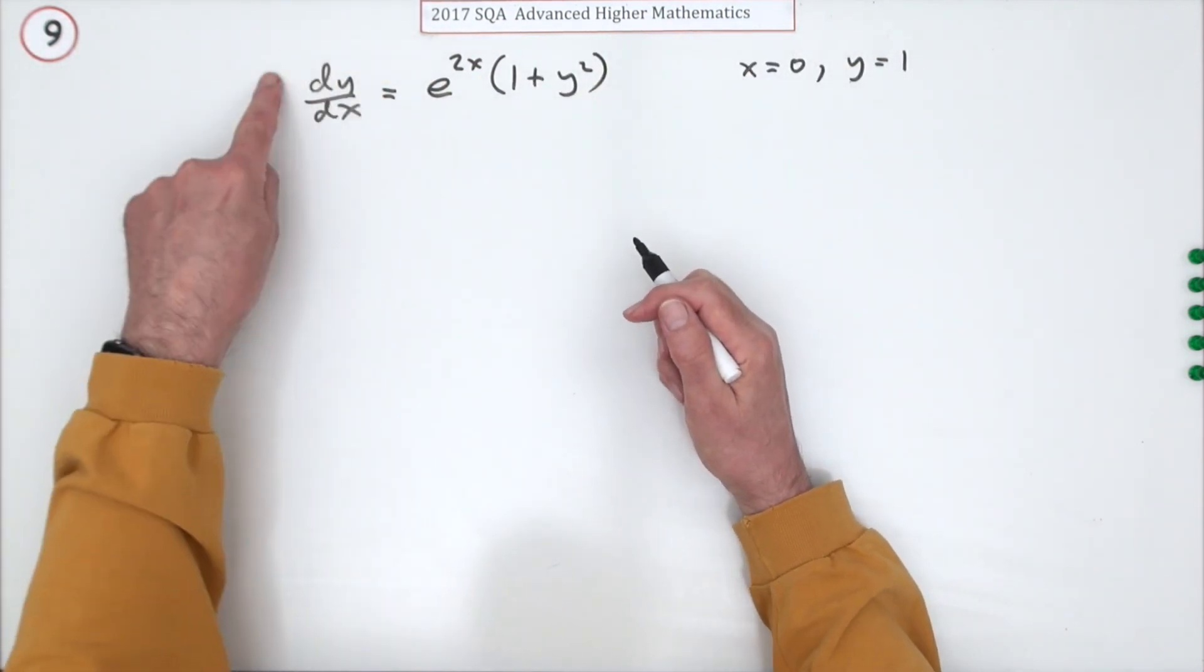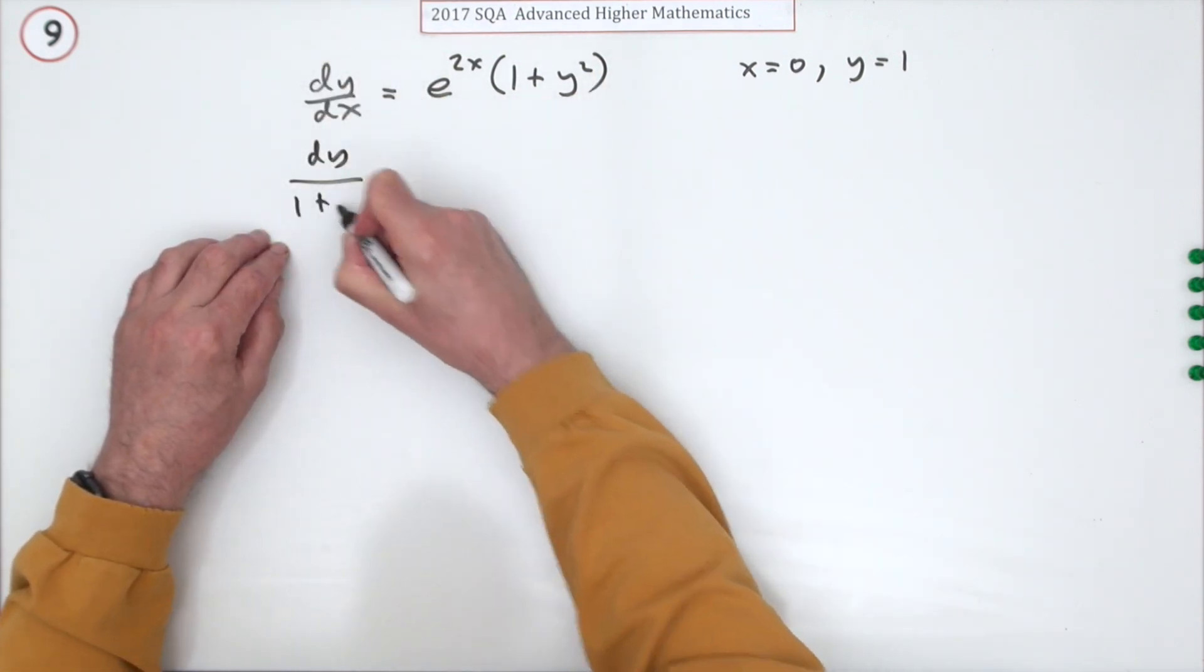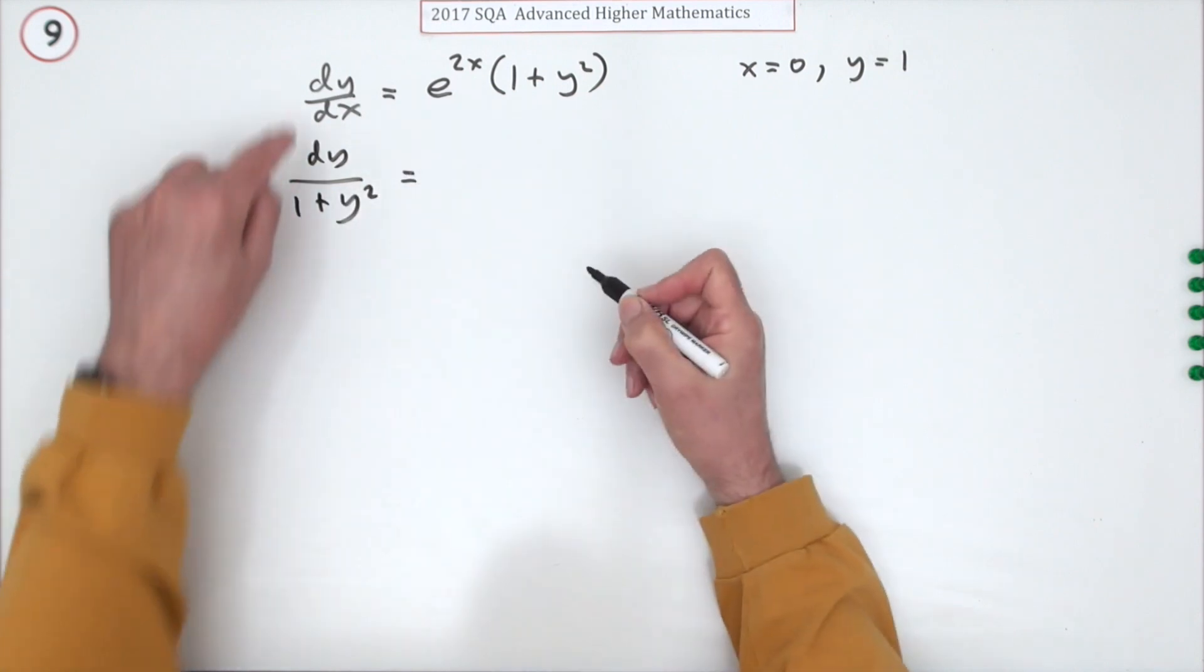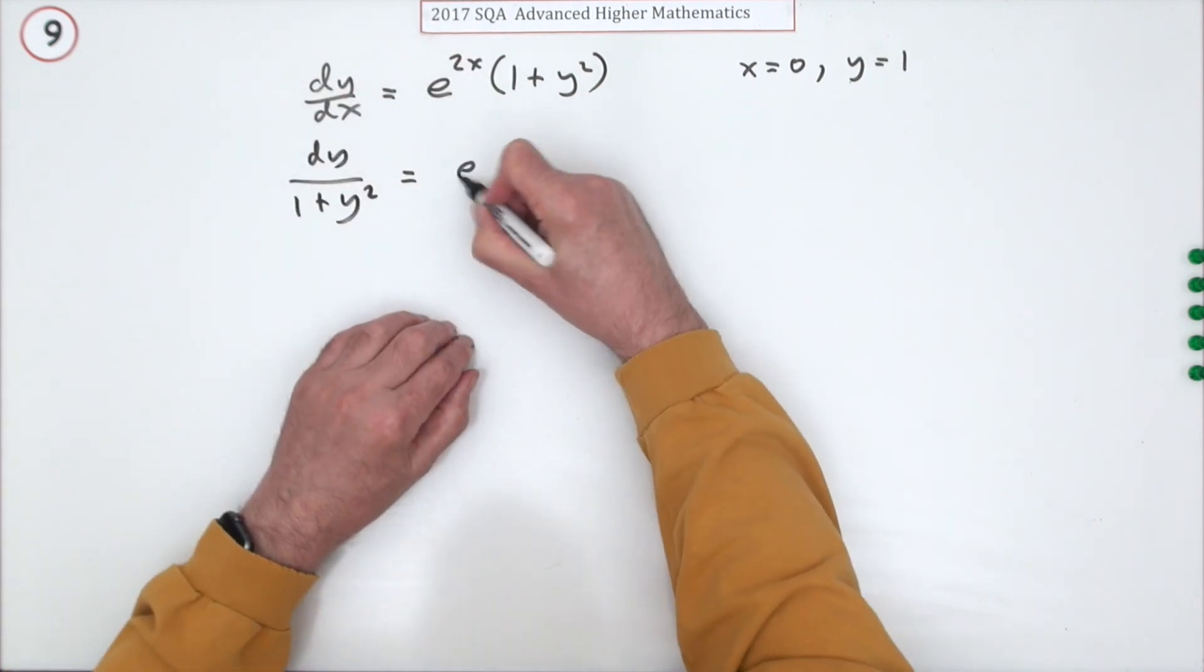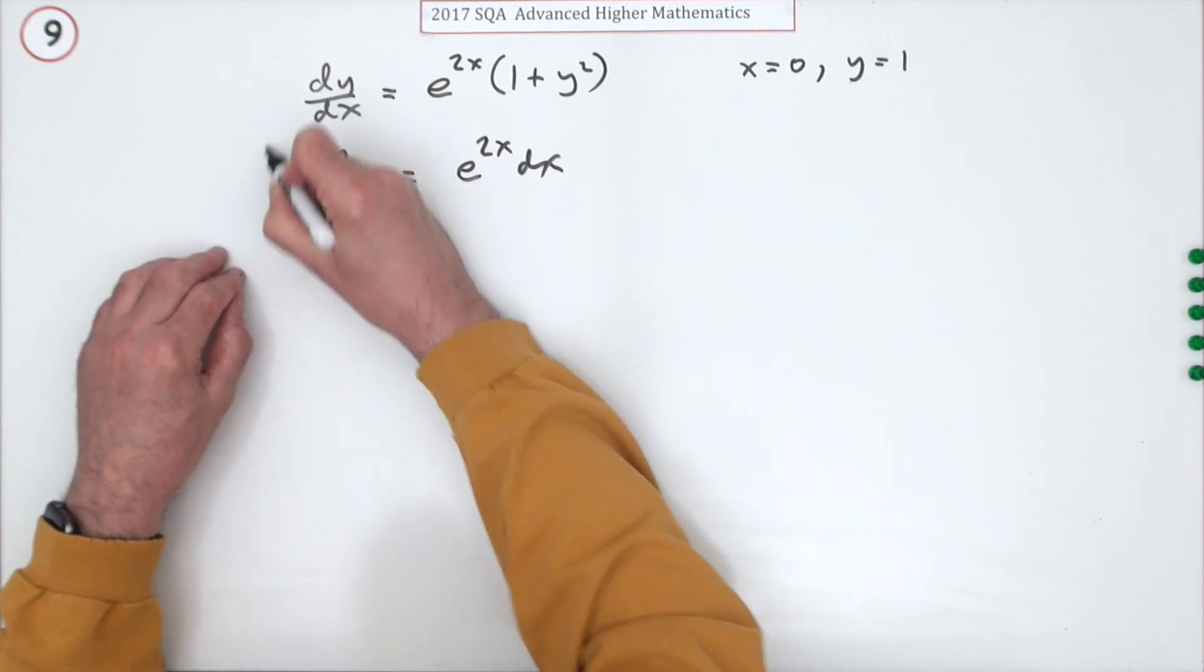I'll take the y's over to this side to join its differential dy. You'll have to go underneath it. And I'll take the dx over to this side. E to the 2x dx. Separate the variables. Now they're ready to go.